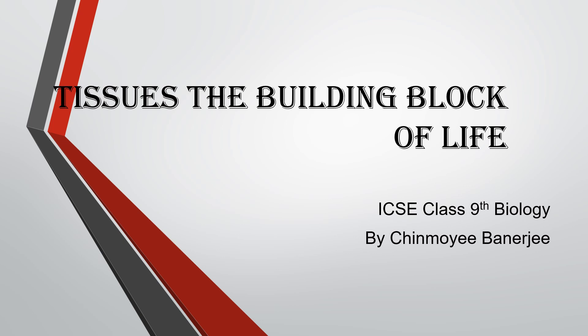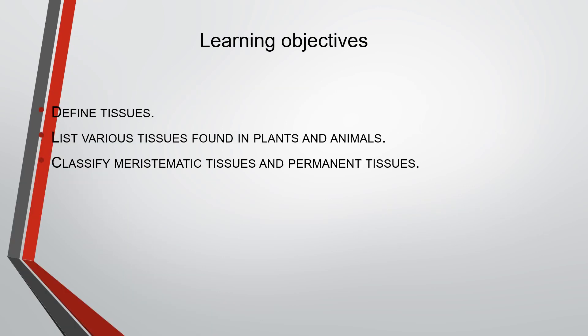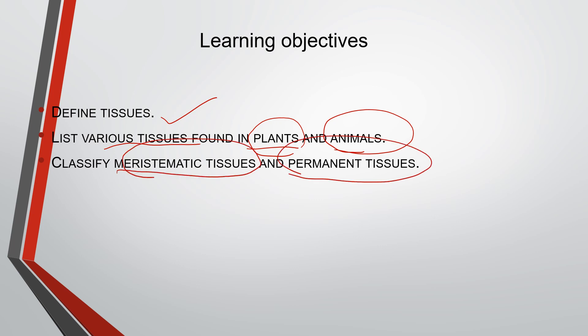Now let us start with today's topic of tissue. Here are the learning objectives of this lesson. At the end of this lesson, we will be able to define what tissues are. We will list the various tissues found in plants — the animal part I will cover in the next video, as plant tissues alone are a large number to learn. We will also classify the meristematic tissue as well as the permanent tissue.